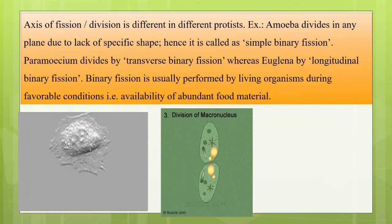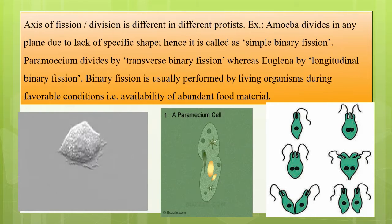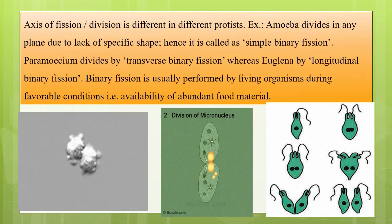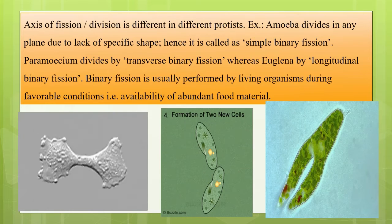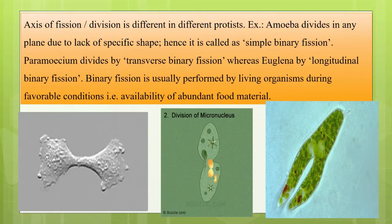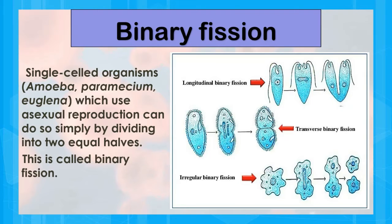Euglena undergoes longitudinal binary fission — it divides lengthwise. So it is called longitudinal binary fission; you can actually see the real image of euglena dividing. Binary fission is usually performed by living organisms during favorable conditions, such as availability of abundant food material. The three organisms we discussed under binary fission are: euglena (longitudinal), paramecium (transverse), and amoeba (simple/irregular). For example, a paramecium cell can divide, grow, and divide again within 8 hours.